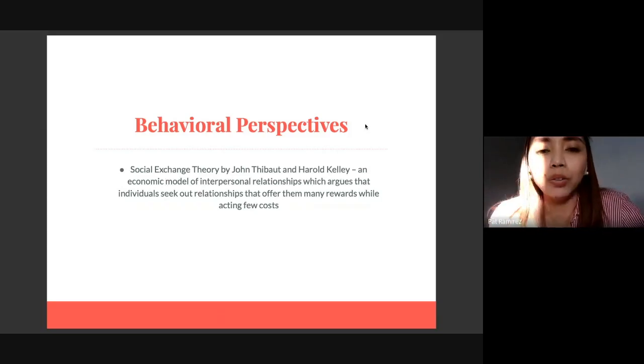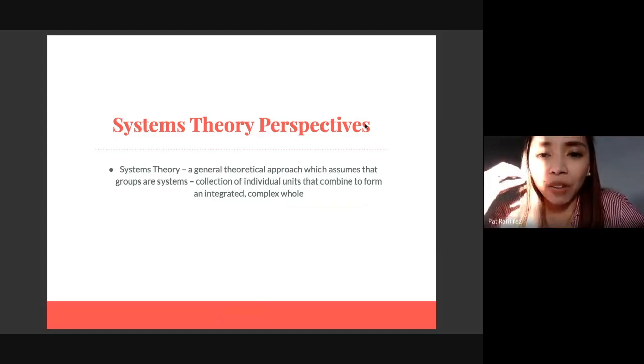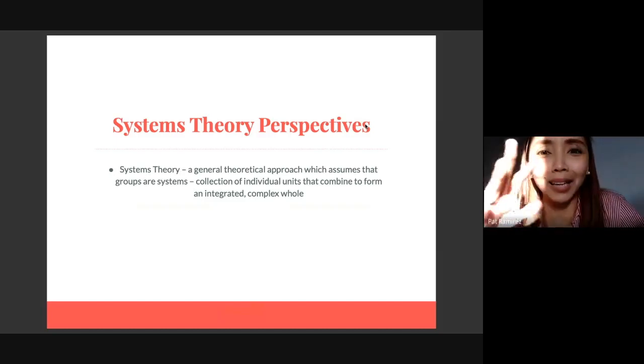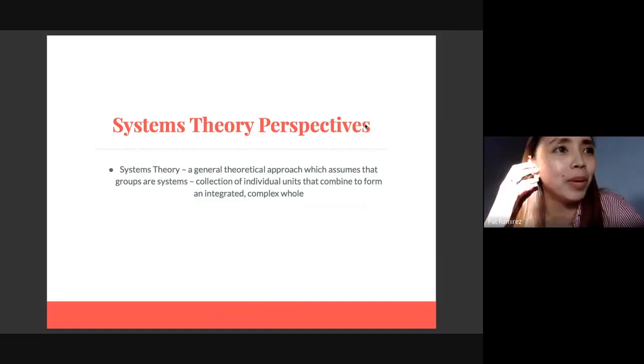Under systems theory perspective, we have systems theory. This is actually a general theoretical approach which assumes that groups are systems - it's a collection of individual units that combine to form an integrated yet complex whole. For example, the family. It's not just mother, father, child. But there are so many dynamics - it's really a system.